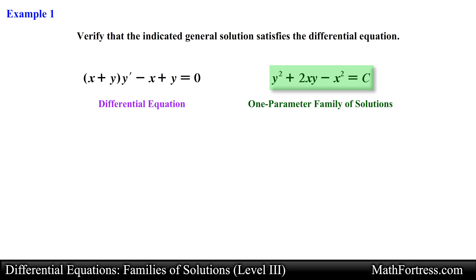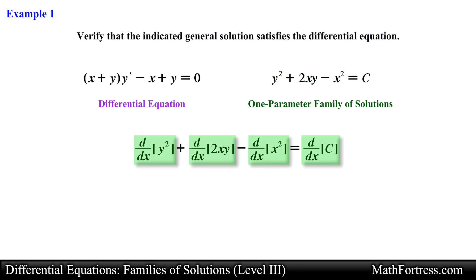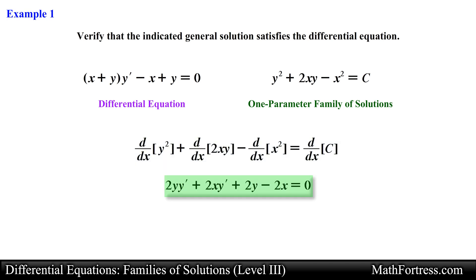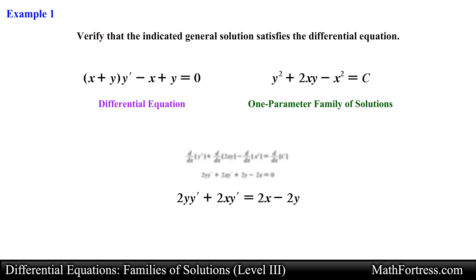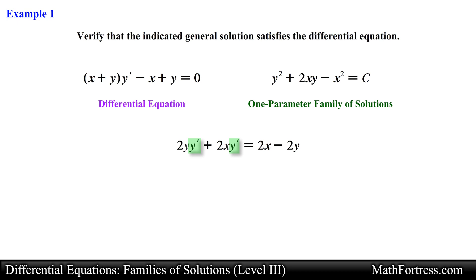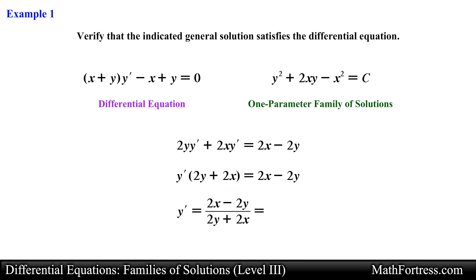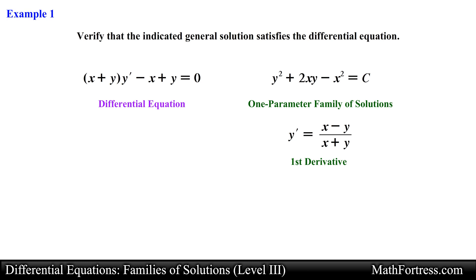Let's go ahead and take the derivative of this solution implicitly. Taking the derivative of each term with respect to x and applying the power rule along with the product rule, we obtain the following expression. Having found the derivative implicitly, we now need to solve for y prime. So let's move all the terms containing y prime to one side and the rest of the terms to the other side of the equation. Now that we have all the terms containing y prime on one side, we go ahead and factor it out. Then it's just a matter of solving for y prime, so we divide both sides by the quantity 2y + 2x. Finally, we can simplify this expression by factoring out a 2 in the numerator and denominator, which simplifies to 1. The first derivative of this implicit function is equal to the following expression.